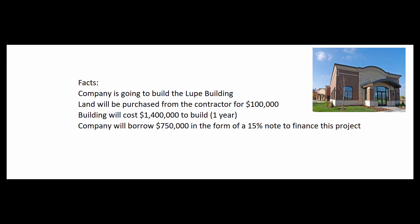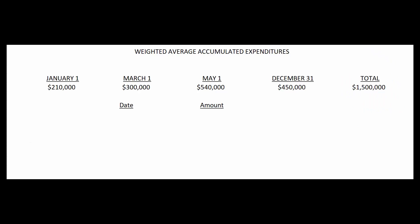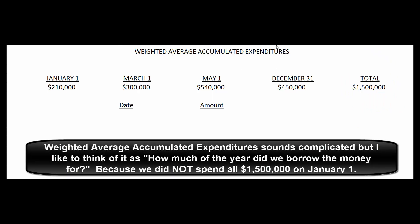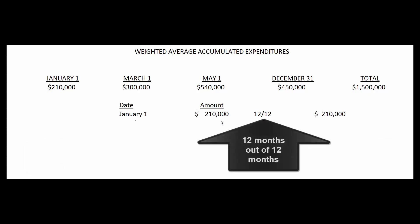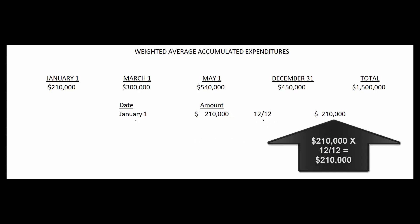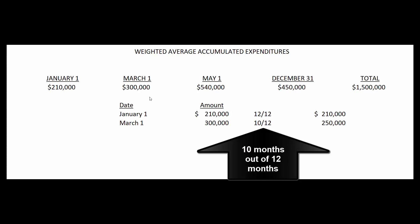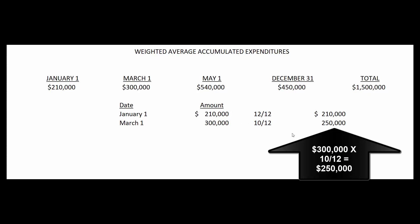The first step is to figure out the weighted average accumulated expenditures — think of it as how long we borrowed the money. On January 1st, we cut a check for $210,000. We borrowed that money for the whole year: 12/12 × $210,000 = $210,000. On March 1st, we cut a check for $300,000. That money was borrowed for 10 months (March through December): 10/12 × $300,000 = $250,000 weighted average accumulated expenditure.